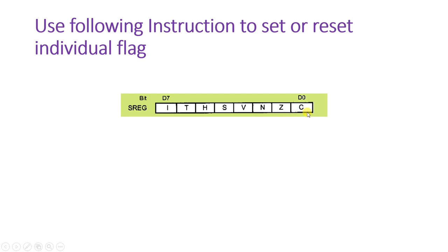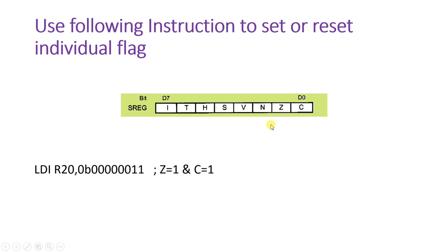Now let me explain how to set or reset individual flags. We can directly load data into the status register. Here, the bitwise data defined has its last two bits as 1, so Z equals 1 and C equals 1. We load this data into R20, then execute OUT SREG, R20 — this loads the R20 data into the status register SREG. After executing this instruction, the SREG status will be 00000011, allowing us to change the flag status directly.